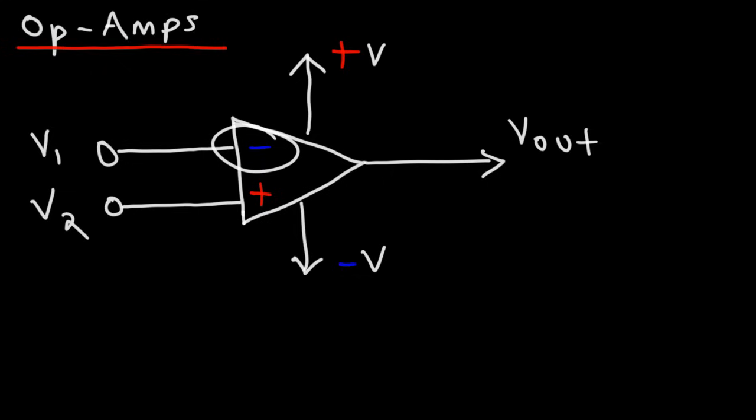So if you apply a signal to the inverted input, the output signal will be 180 degrees out of phase with that. The positive terminal is the non-inverted input. So if you apply a signal there, the output signal will be in phase with the input signal at V2.